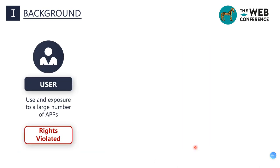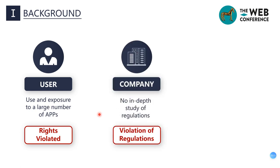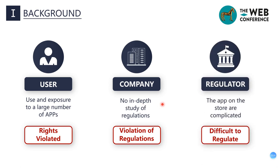It would be significant to have a method to automatically analyze privacy policies. For users who use a large number of apps, their privacy rights are likely to be violated. Detecting compliance automatically allows users to be aware of their rights. For app companies, many do not intend to violate regulations but may accidentally do so without in-depth study. For regulators, they need to regulate a large number of privacy policies which are complex and difficult to read manually. So this is useful for users, app companies, and regulators.